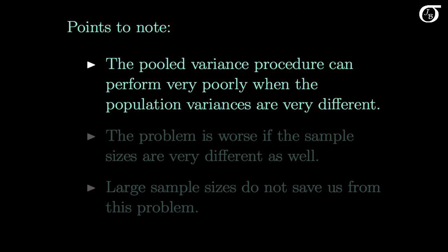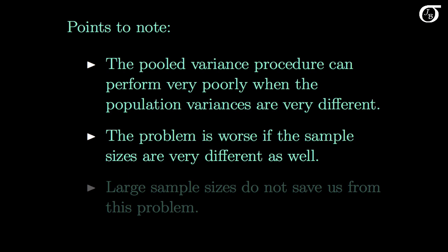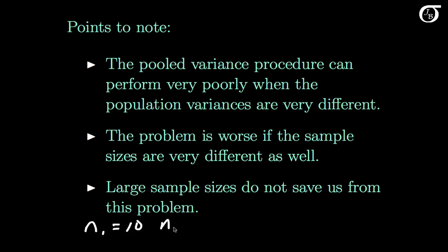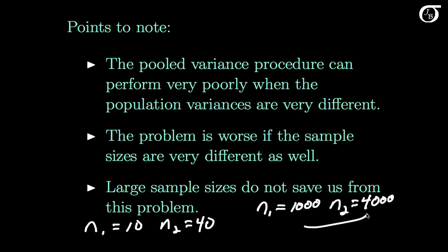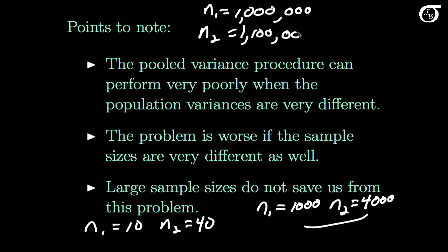The pooled variance procedure can perform very poorly when population variances are very different, and the problem is worse if sample sizes are very different as well. Importantly, large sample sizes do not save us from this problem — if n1 was 1,000 and n2 was 4,000, it would still be a problem. Also note that it's really the ratio of sample sizes and standard deviations that matters, not the absolute difference. Sample sizes of 1,000,000 and 1,100,000 would be considered quite close, even though they differ by 100,000.